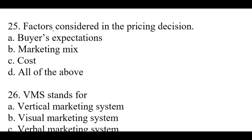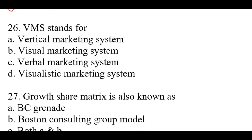Question number twenty-five: Factors considered in the pricing decision — right option is D: buyers' expectations, marketing mix, and cost. Question number twenty-six: VMS stands for — right option is A: Vertical marketing system.